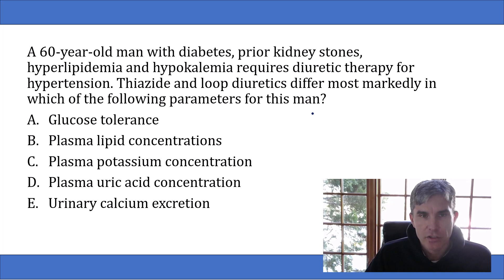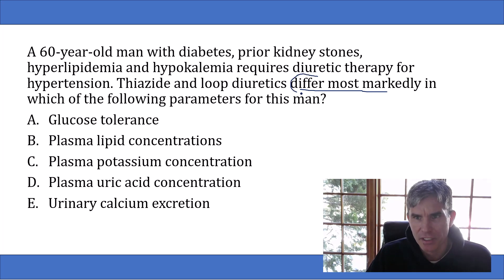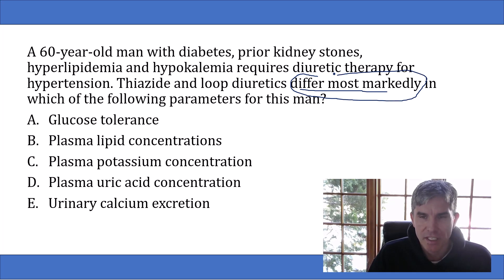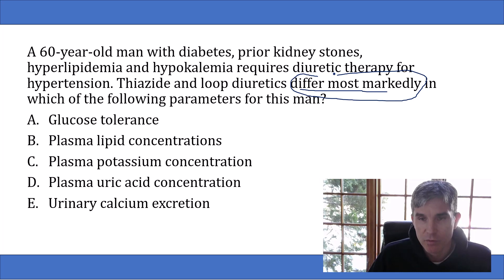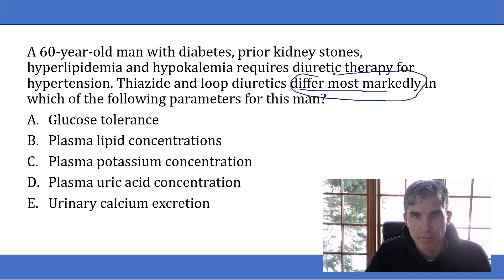I think this question is worded very poorly. It asks, 'thiazide and loop diuretics differ most markedly in which of the following parameters for this man?' This is a very confusing sentence. What do they mean by 'differ most markedly'? That's an odd, subjective, and ambiguous term. I have a feeling this question was in circulation on Step 1 exams but was pulled for poor performance because of its wording. Some questions on NBME practice exams were previously in circulation but get pulled when they're performing poorly. But when you boil this question down, it's asking: what's the biggest difference of the answer choices between thiazide and loop diuretics? And that's actually a fair topic for a question.